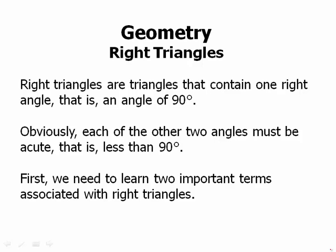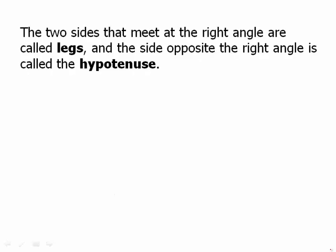First, we need to learn two important terms associated with right triangles. The two sides that meet at the right angle are called legs, and the side opposite the right angle is called the hypotenuse. We mentioned legs briefly in the previous video, but here's the formal definition of legs, and also you need to know the word hypotenuse.